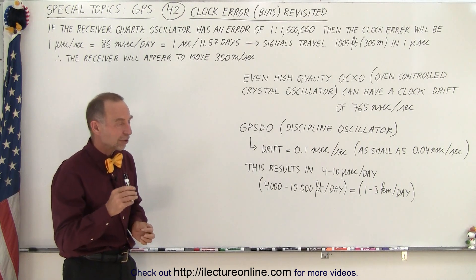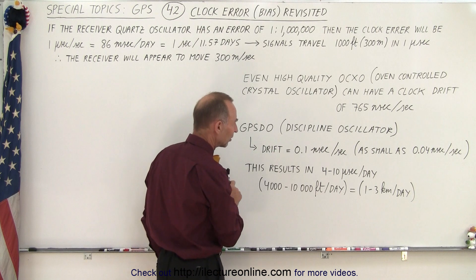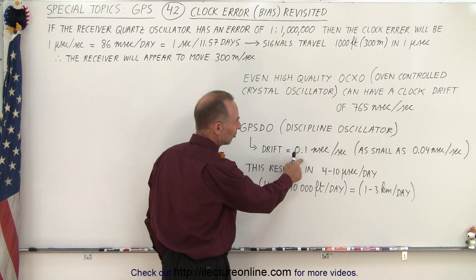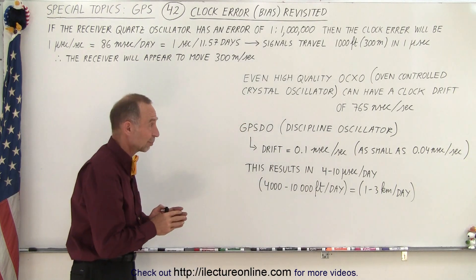So we do have very expensive and very accurate oscillators, the GPS-DO oscillators. They have drifts of about 0.1 nanosecond per second, or as small as 0.04 nanoseconds per second.